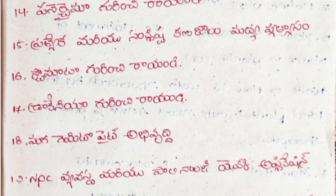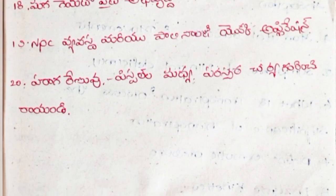17. Drakenya Gurinchi Rayandi. 18. Maga Gametophyte Abhi Vuruddhi. 19. NPC Vyavasta Mariyu Palynology Oka Application. 20. Paragarenu Pistol Madhya Paraspara Chariya Gurinchi Rayandi. These are the 4th semester important questions. Prepare well and all the best.